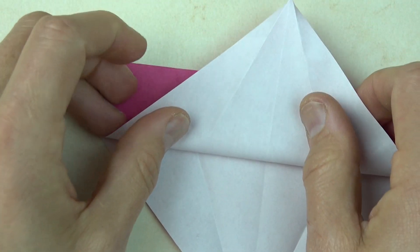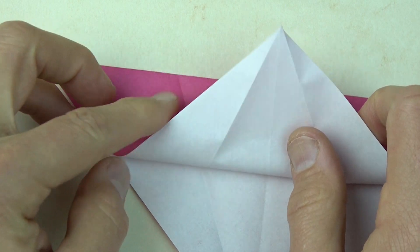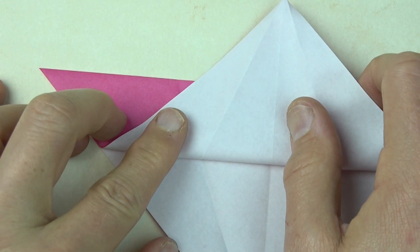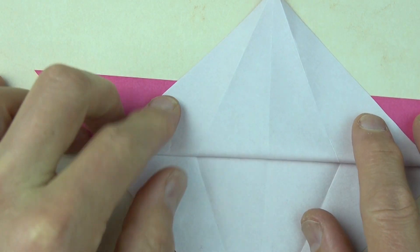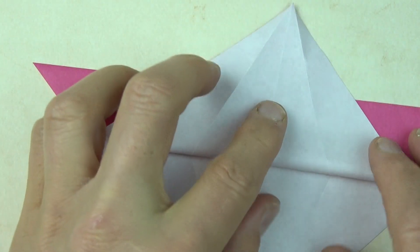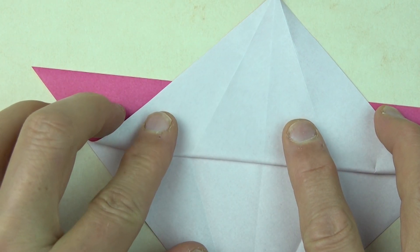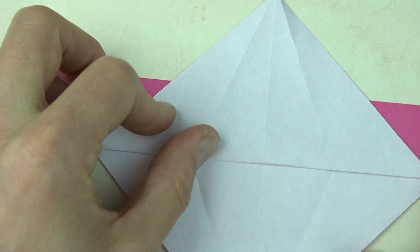And now fold the front flap up so that this edge touches this point. And same on this side. And make the fold.